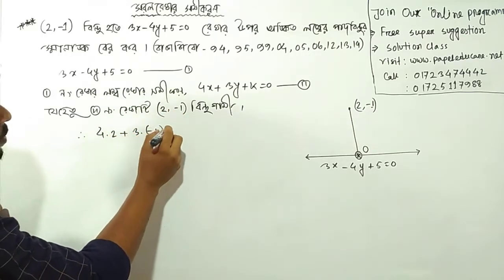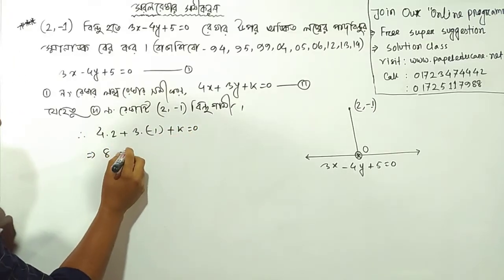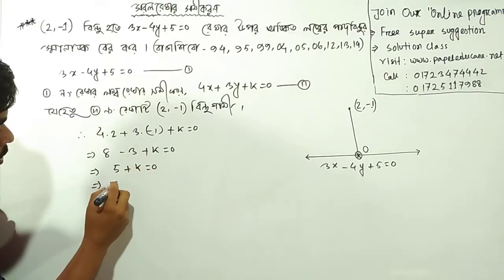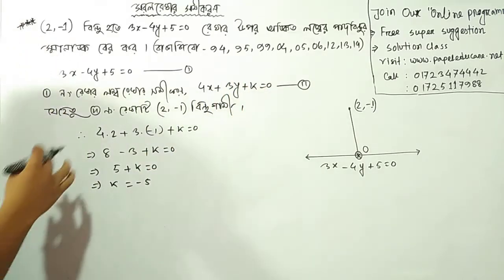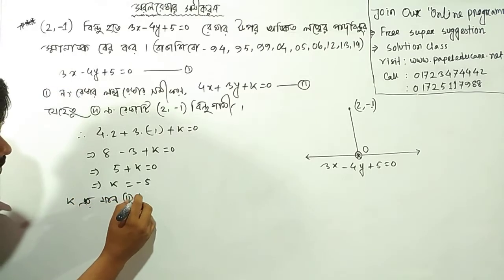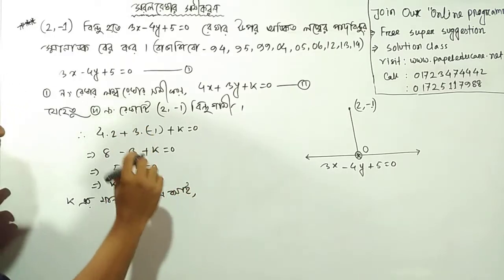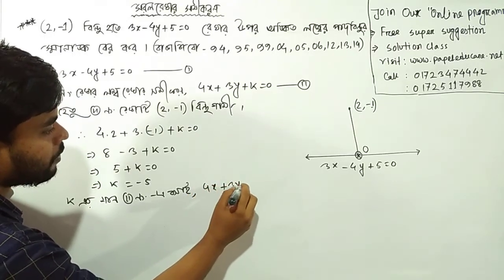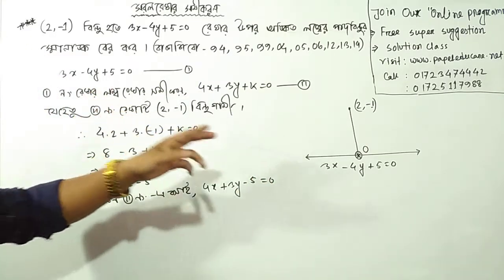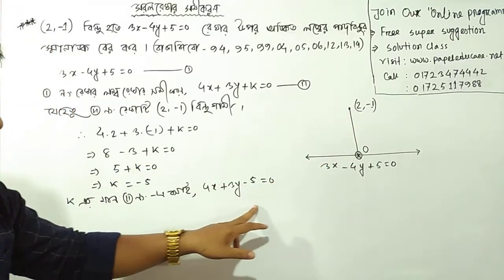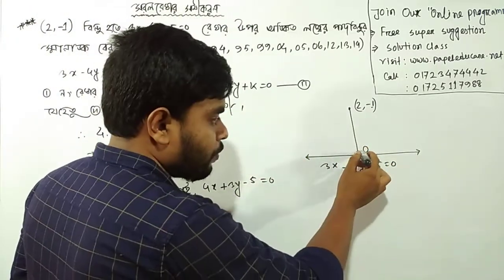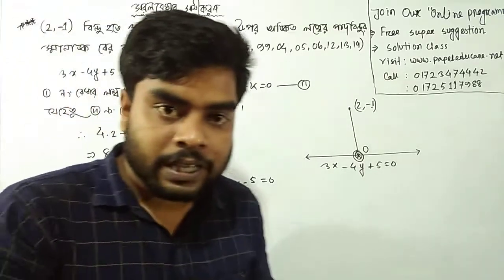1x plus k is equal to 0. 2x plus 2y plus k is equal to 0. 3x plus k is equal to 0. 2x plus k is equal to 0.